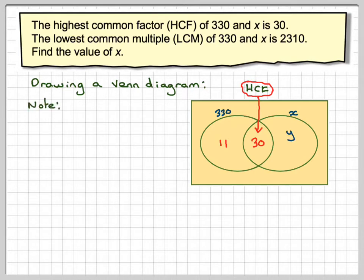So now if we let this one be y, x will be made up by finding 30 times y. So y just represents this area here only. The whole of this represents x, so it'll be 30 times y will give me x.